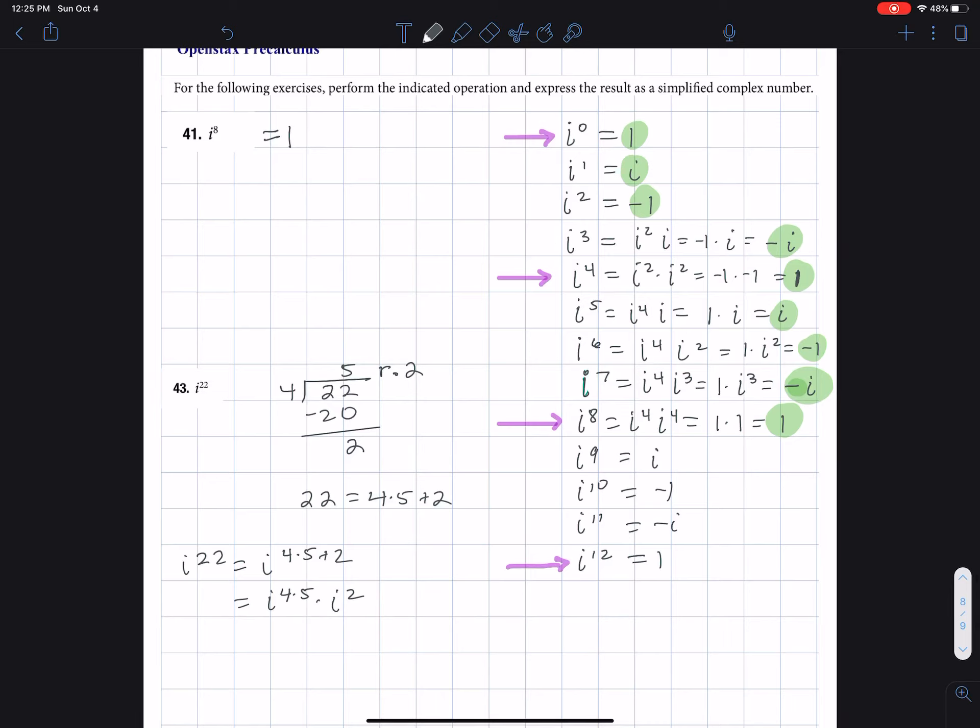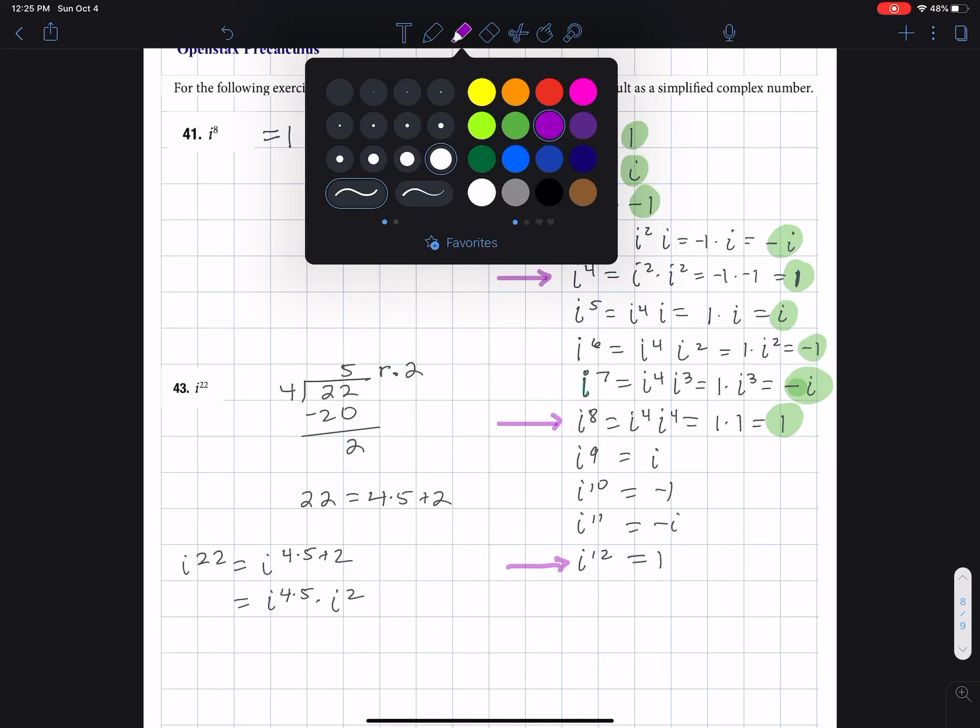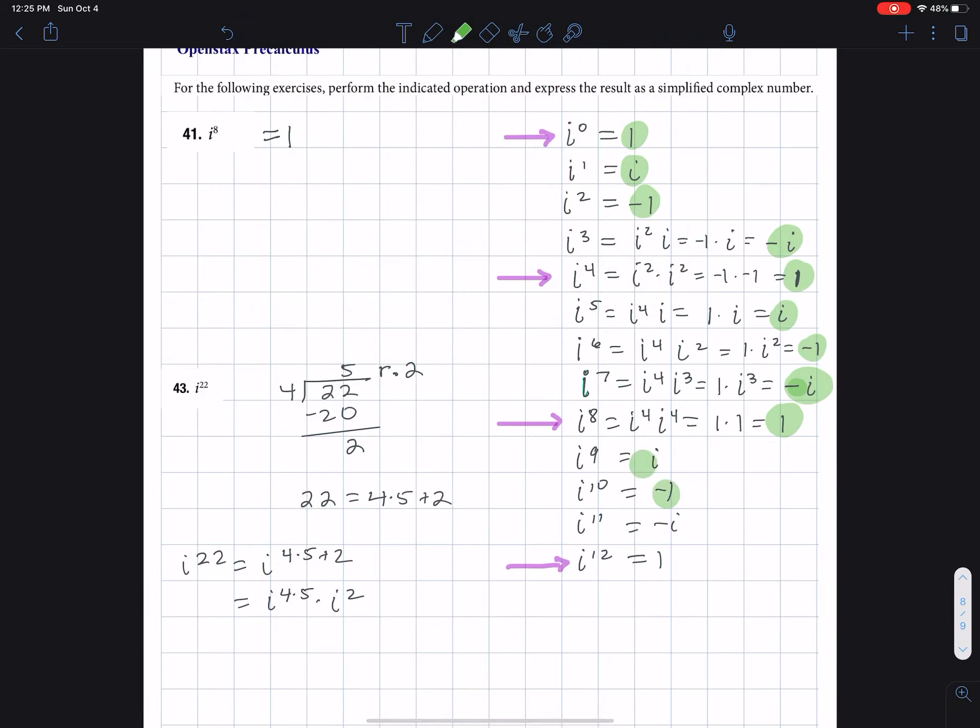Now what we've shown here is that if the power of i is a multiple of four, then that's equal to one. So therefore, if I have i to the four times five, i to the 20, that's one. And so I have one times i squared.